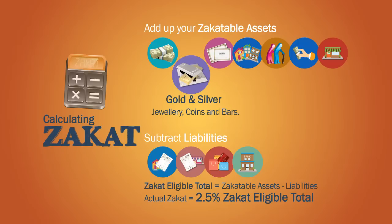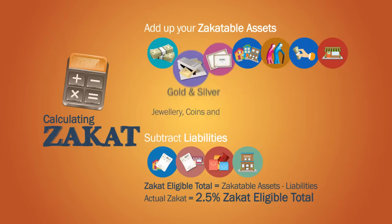Gold and silver — jewellery, coins and bars — whether in use or in storage, as well as any personal items in which more than half the metal is gold or silver.